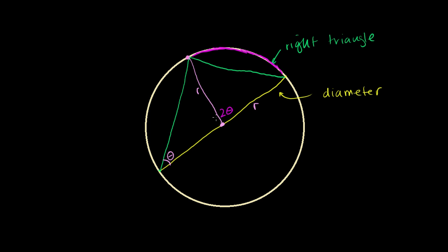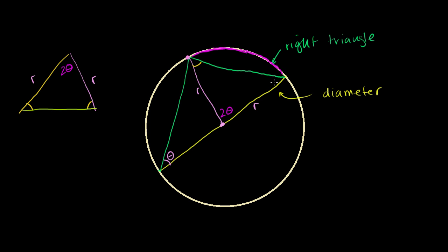Now, this triangle right here is an isosceles triangle. If I rotated it and flipped it over, it would look like this, with the green side down, and both of these sides are of length r. This top angle is 2 theta. Since its two sides are equal, this is isosceles, so these two base angles must be the same — that and that must be the exact same base angle.